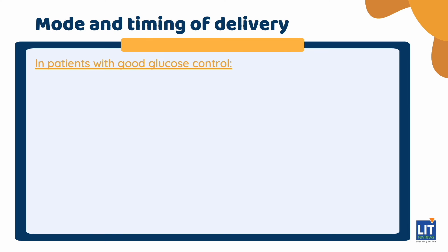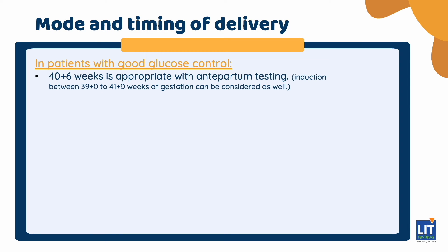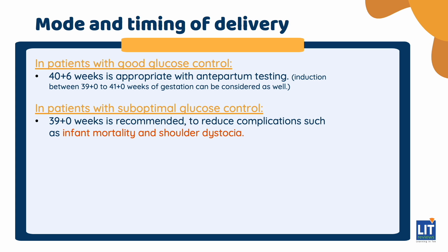Dual use of oral agents is not recommended in pregnancy due to minimal safety and efficacy data, with concerns of adverse fetal effects as both drugs cross the placenta. In patients with good glycemic control, expectant management up to 40 plus 6 weeks is appropriate with antepartum testing. However, induction between 39 plus 0 to 41 plus 0 weeks of gestation can be considered as well. In patients with suboptimal glucose control, induction of labour at 38 plus 0 to 39 plus 0 weeks is recommended to reduce complications such as infant mortality and shoulder dystocia.